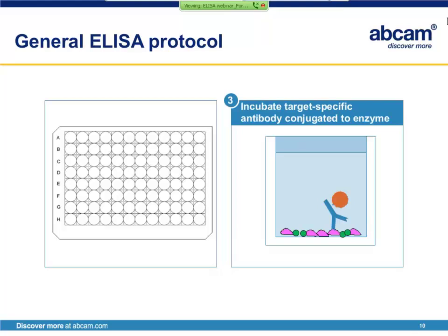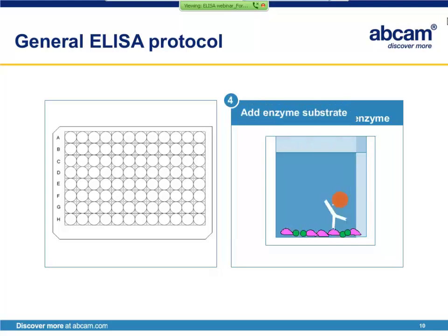In step three, we'll incubate the target-specific antibody. Here we show the antibody conjugated to a reporter enzyme. Step four, add enzyme substrate, and you can see the well turned blue, representing the colorimetric product one would see in the microtiter plate well. Magnitude of color production is subsequently determined by absorbance readings via a spectrophotometer.